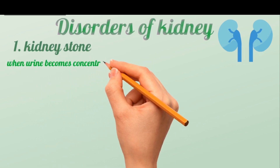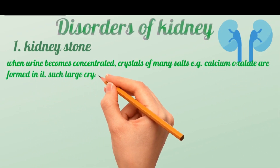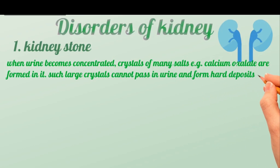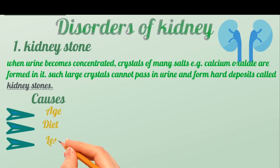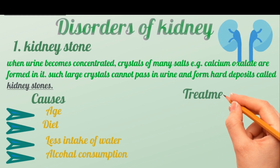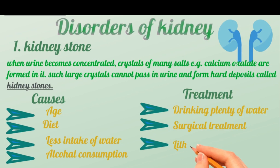There are many different kidney disorders. Kidney stones form when urine becomes concentrated and crystals of salts — for example, calcium oxalate — form in it. Such large crystals cannot pass in urine and form hard deposits called kidney stones. Some may travel to the ureter or urinary bladder. Causes include age, diet, less intake of water, and alcohol consumption. Treatment options include drinking plenty of water, surgical treatment where the affected area is opened and stones are removed, and lithotripsy, in which non-invasive shock waves from outside are bombarded on the stones to break them.